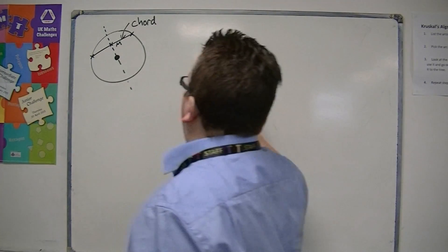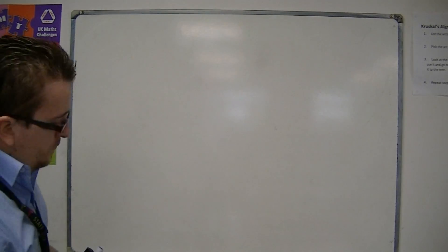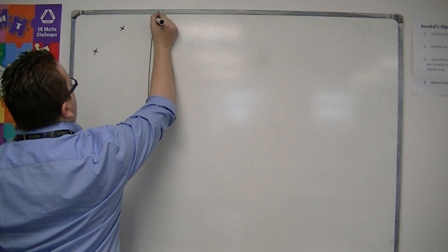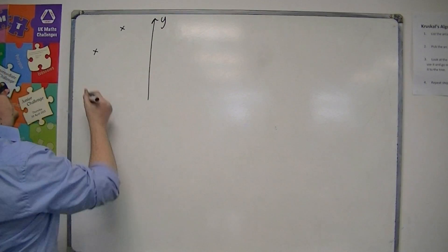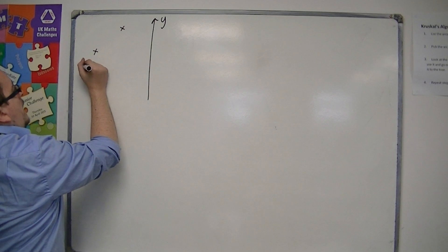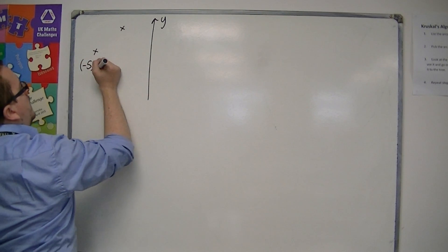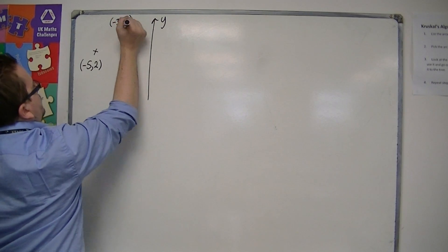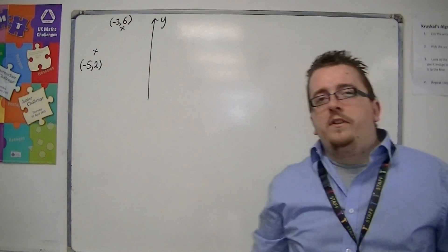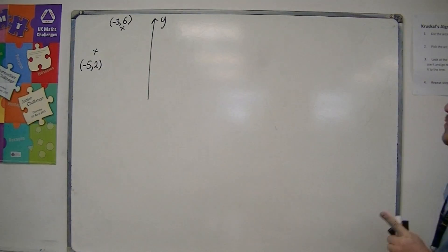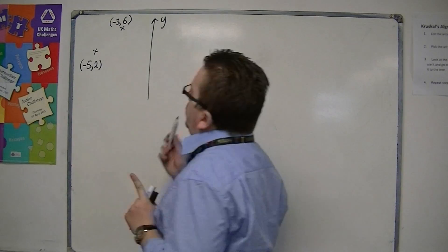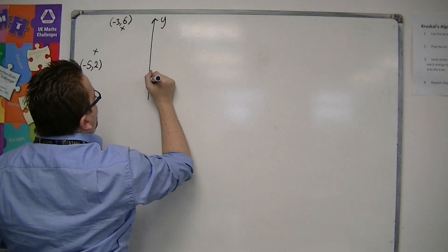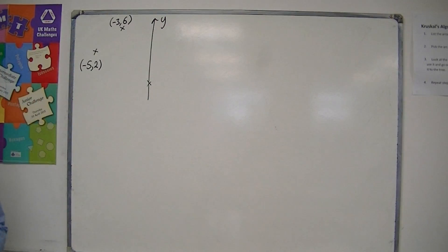So let's say we had a problem where we have these two points and the y-axis. And let's say these two points are minus 5, 2, and minus 3, 6. And let's also say that we know that the centre of the circle that these two points are on lies somewhere on the y-axis.